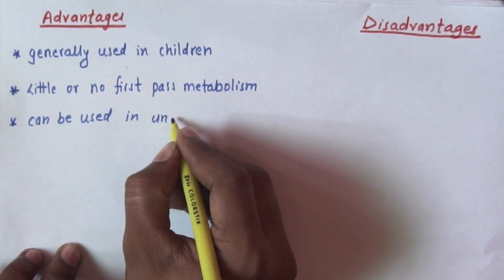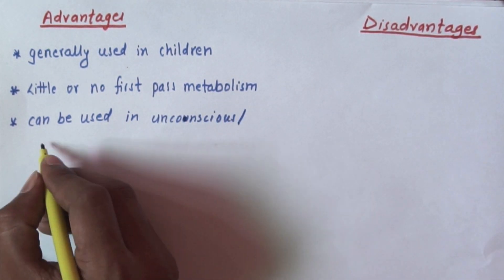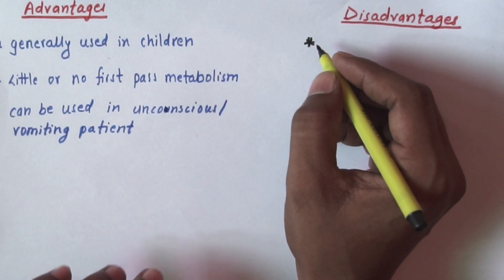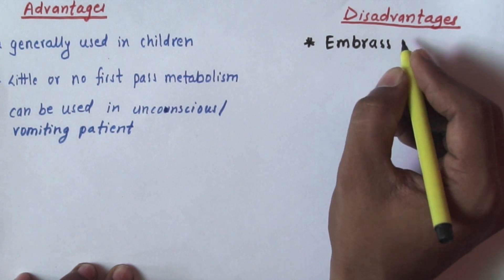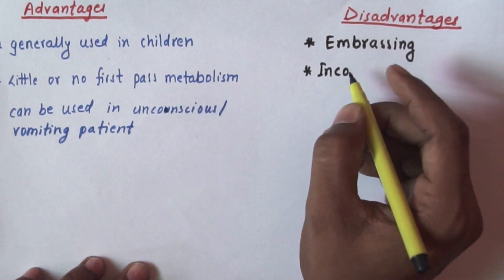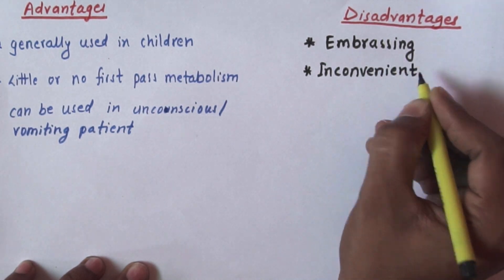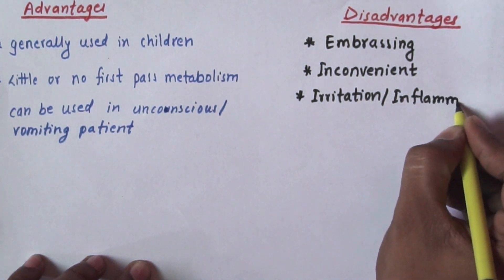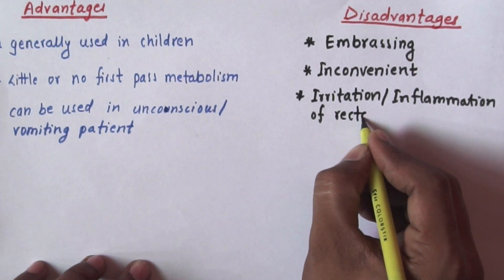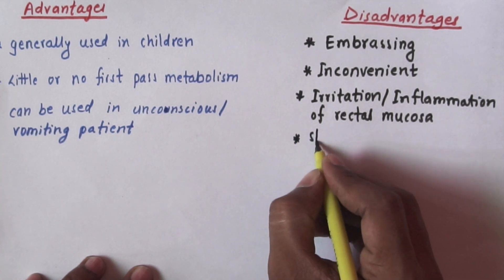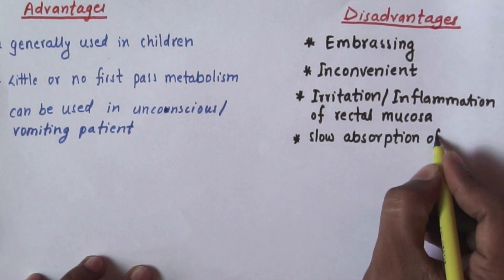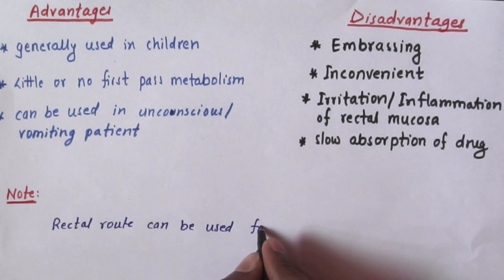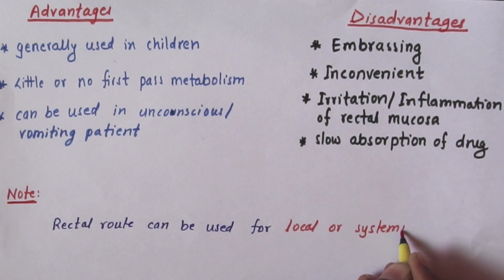It can be used in unconscious or vomiting patients. Vomiting patients generally do not prefer to take this drug. It is inconvenient. Next, it can produce irritation or inflammation of the rectal mucosa. So this is a problem, and the absorption will be slow. So slow absorption of drug will be there.